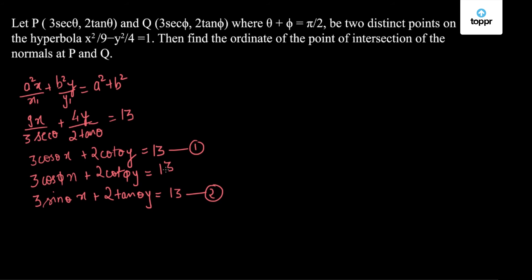So 1 and 2 are my normals at point P and Q respectively. So I have to find now their point of intersection which means I have to solve these two equations.